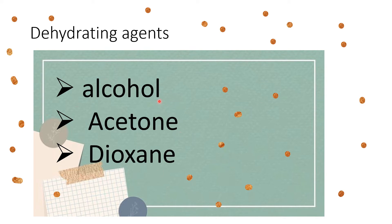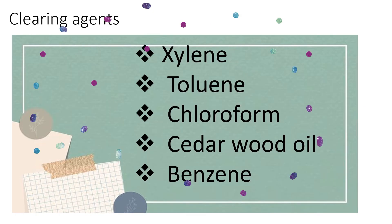Alcohol is one type of helpful dehydrating agent. We use alcohol because it removes the water molecules and replaces them with alcohol.